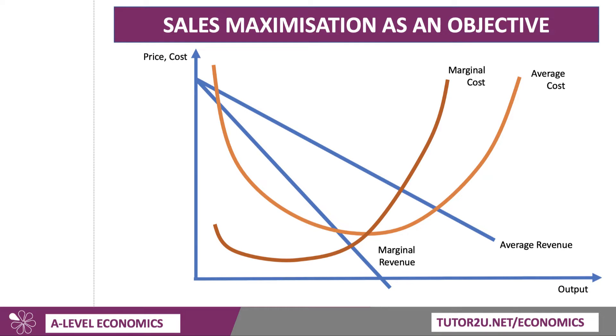Here's our scenario with a firm in imperfect competition, facing downward sloping revenue curves and short-term cost curves — so marginal and average costs, marginal and average revenue.